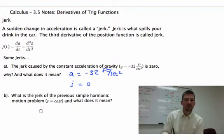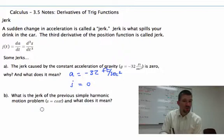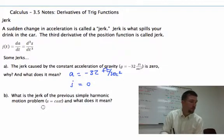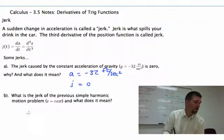So what is the jerk of the previous simple harmonic motion problem, and what does that mean? Well, that previous simple harmonic motion problem, if we look at it, if we can go back to it, we were looking at an acceleration that said negative 5 cosine t.